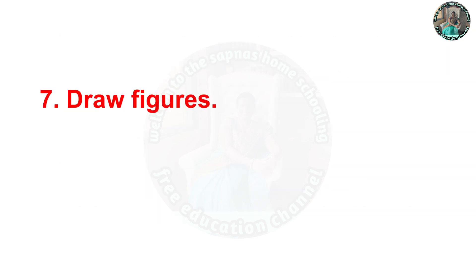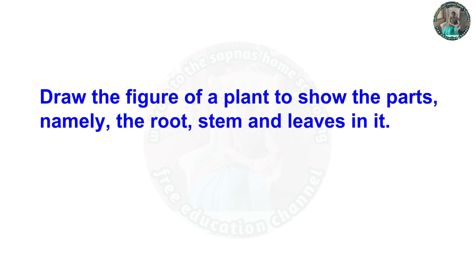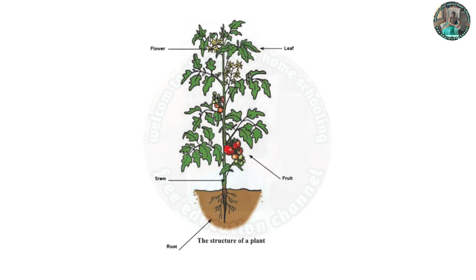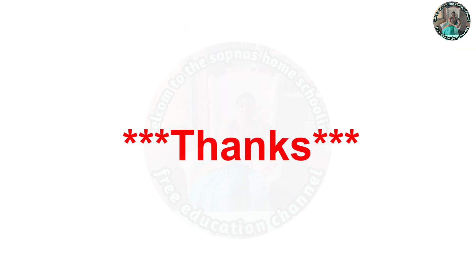Question 7 is draw figures. Draw the figure of a plant showing parts: roots, stem, and leaves. This is the diagram with the names labelled on it. Thank you, students.